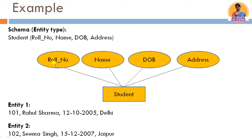At a particular instance of time, there will be different entity instances. For example, entity 1 has roll number 101, Rahul Sharma, with date of birth and address. The second entity has roll number 102, Seema Singh. This collection of entities is called an entity set, and the schema is called an entity type.